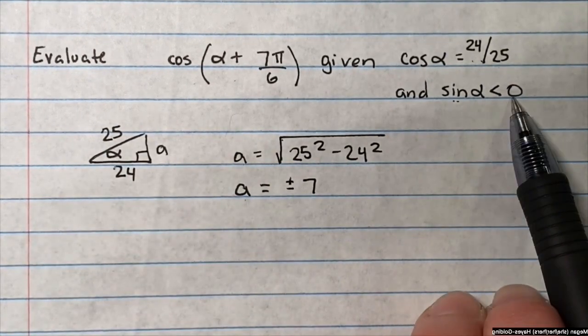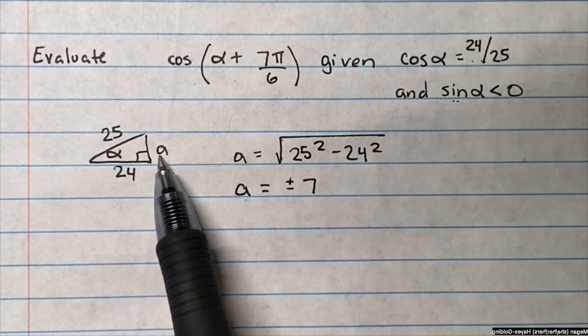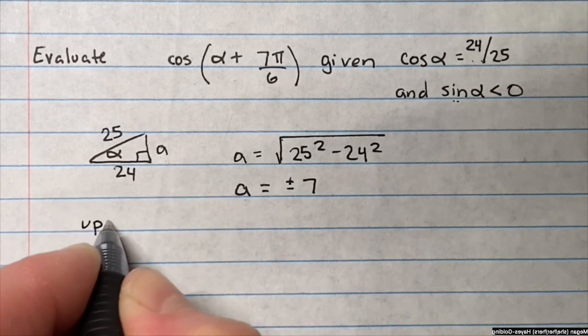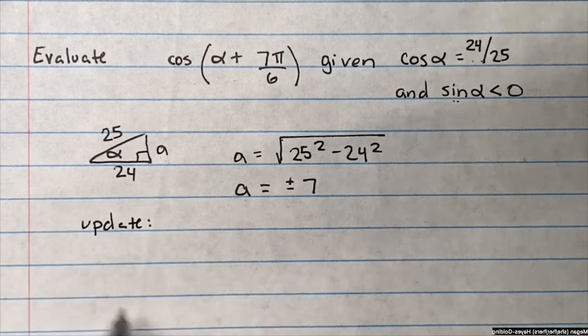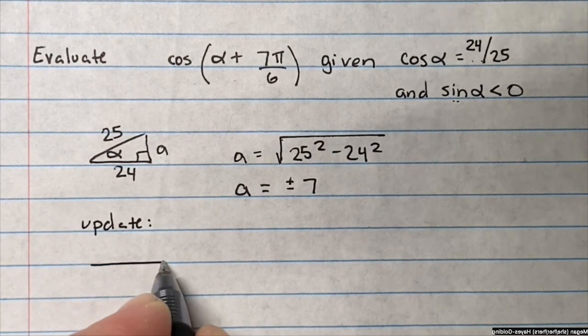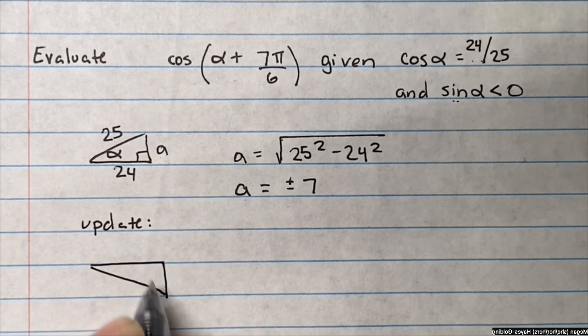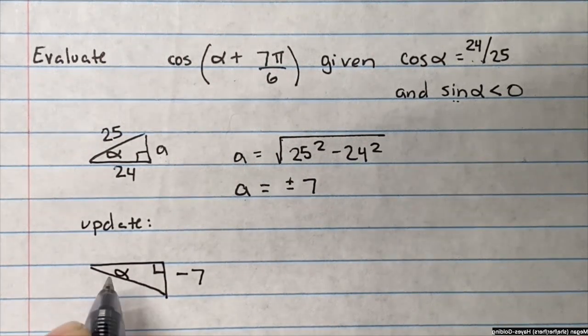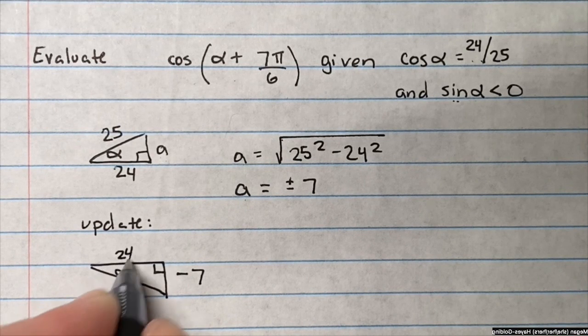We know that the sine of alpha is less than zero. That suggests that side A here should be negative, so I'm going to update the triangle and draw the triangle kind of flipped. Side A is now negative 7, alpha, 24, 25.